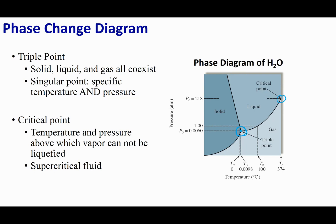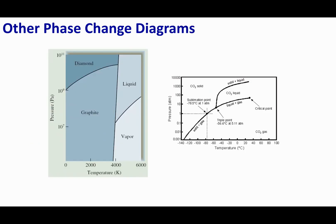The other special point is found at the end of the liquid-gas border — this is called the critical point. At the critical point, there is no longer a discernible difference between liquid and gas. Above and to the right of this point, we have something called a supercritical fluid — a state in between liquid and gas where the two phases blur together and it's indiscernible whether it's really a liquid or a gas.